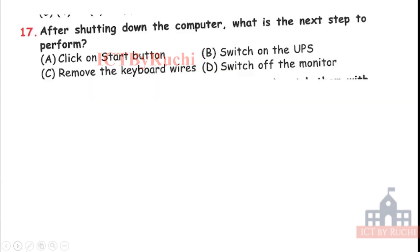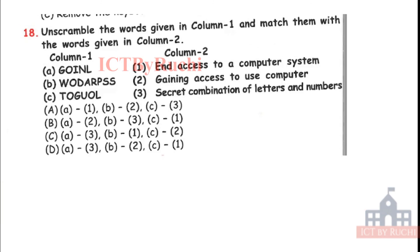Next question. After shutting down the computer, what is the next step to perform? A. Click on the start button, B. Switch on the UPS, C. Remove the keyboard wires, or D. Switch off the monitor. Tell me the answer first. Answer is D. Switch off the monitor. Okay. Because after we shut down the computer, means we are not working on a computer. So to save electricity, we should switch off the monitor.